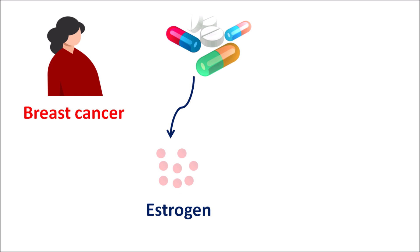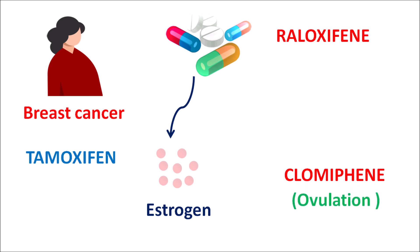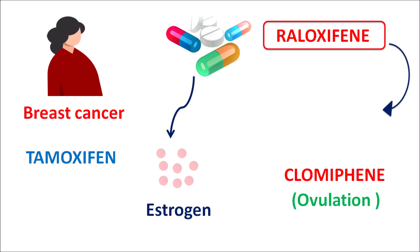For instance, we have drugs like Tamoxifen, which can be used in the treatment of breast cancer both in pre-menopausal as well as post-menopausal women. Another drug with a similar suffix is Raloxifene, belonging to the same category, and Clomiphene is another drug within this category. But Clomiphene is mainly intended to induce ovulation in anovulatory women. Similarly, Raloxifene can be used in the treatment of breast cancer in post-menopausal women only.